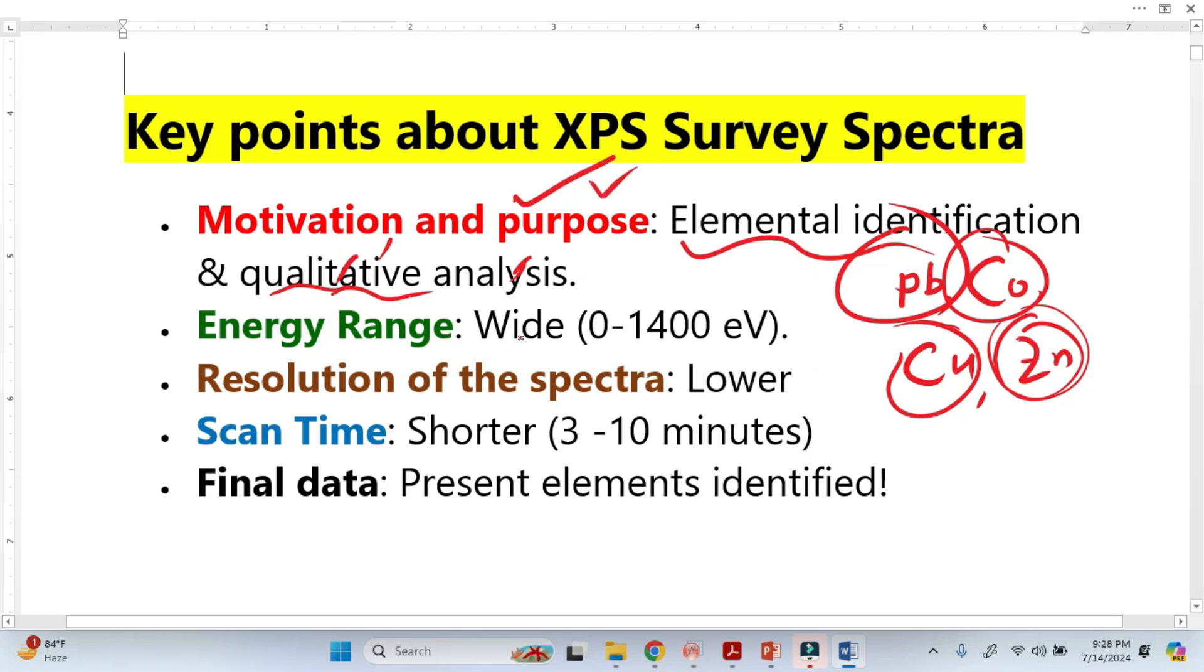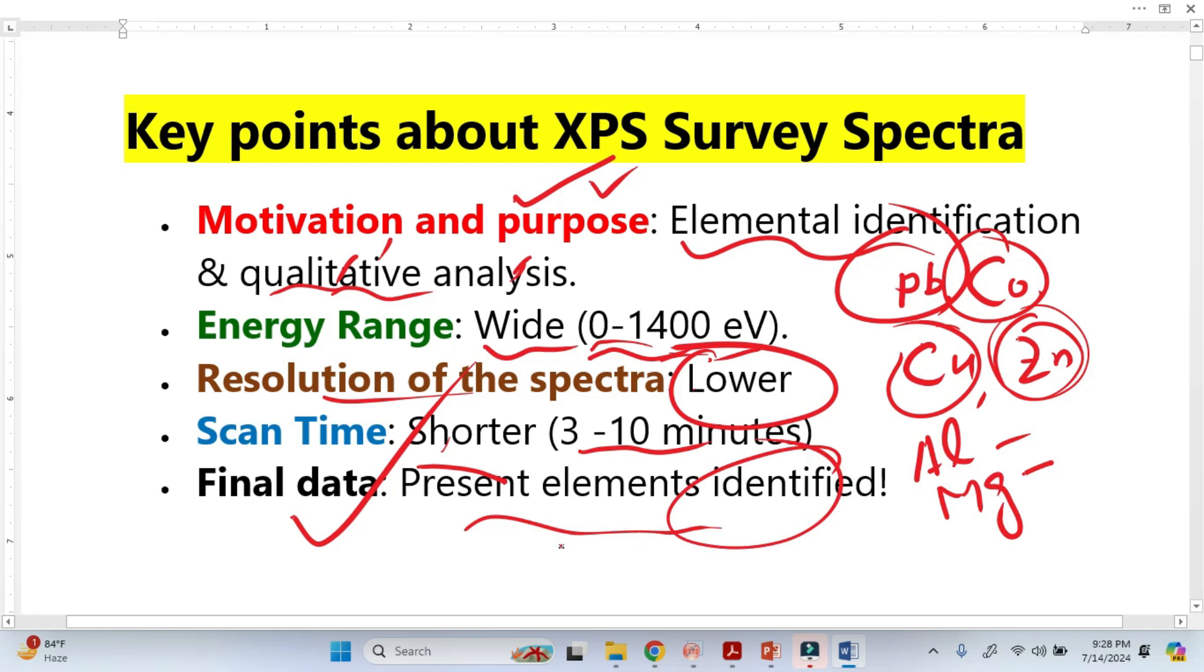The energy range is wide here because we use two sources, one is aluminum, another is magnesium. The resolution is lower here. The scan time is also shorter. You will see that for high resolution we use longer time, but for this it's very short time. And we get the final data, we get just the identified elements in the sample.